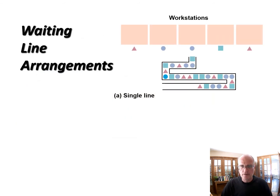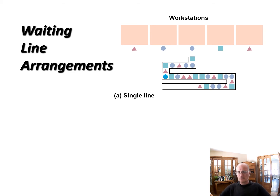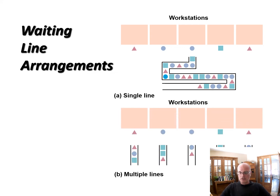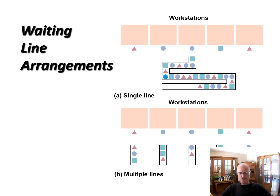You could have a single line and multiple servers — I've seen this at Indigo bookstore and it used to be like this at customs when you came into the airport. We can also have multiple lines for individual workstations, as we often see at the grocery store. If I was to ask you which of these would have the shortest expected waiting times, all else being equal — the truth is that the single line with multiple servers has the shortest expected waiting times.